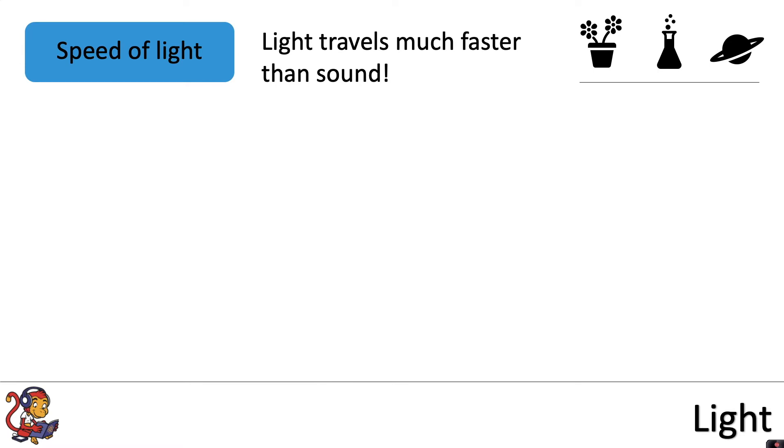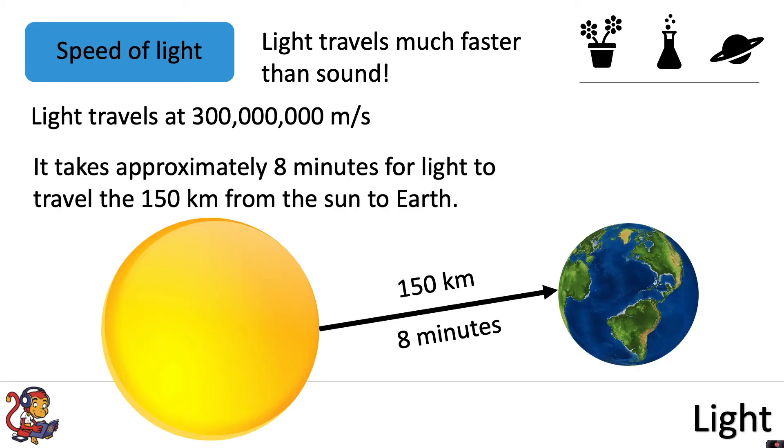Light travels much faster than sound. Light travels at 300 million meters per second. It takes approximately eight minutes for light to travel the 150 kilometers from the Sun to Earth.